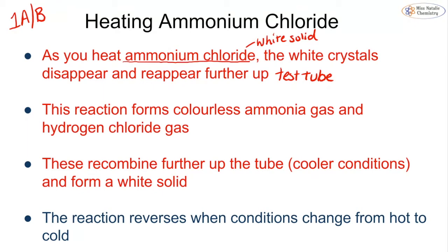The reason for that is when you heat ammonium chloride, you are breaking it down from NH4Cl into ammonia gas, which is NH3, and hydrogen chloride gas, which is HCl. When these gases are formed, particles like to spread out, so they will travel and move further up the test tube. Eventually, moving away from the heat and getting to cooler conditions, they will recombine and form that white solid. So this reaction is reversible depending on whether it is hot or cold conditions.